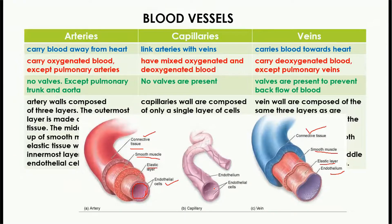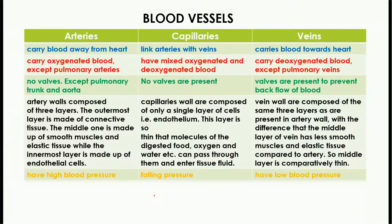Because of the thick middle layer, the lumen of the artery is very small — the lumen is the cavity of the artery. But in the case of veins, as the middle layer has less smooth muscle and elastic tissue, the lumen of the vein is very wide. In arteries, high blood pressure is present; in capillaries, blood pressure starts to fall; while in veins, low blood pressure is present.